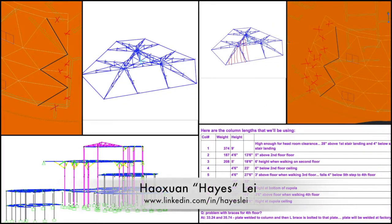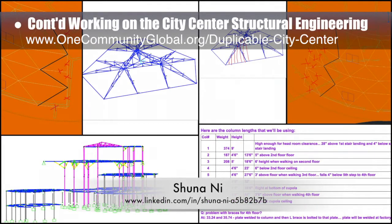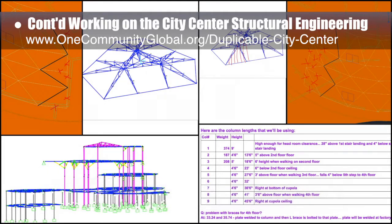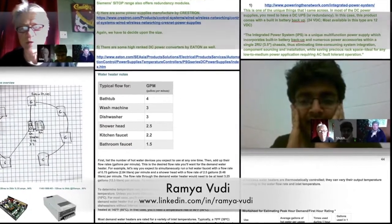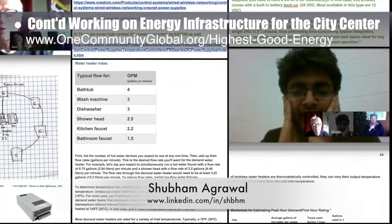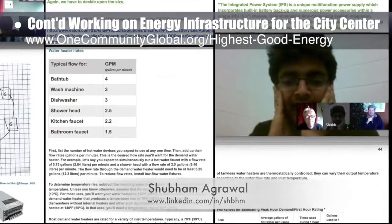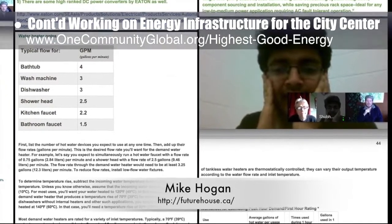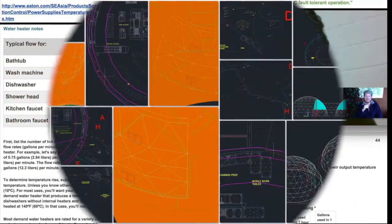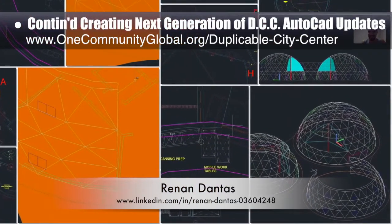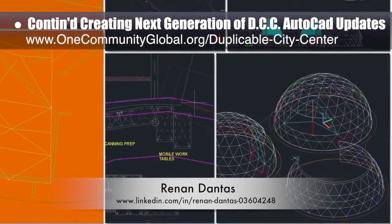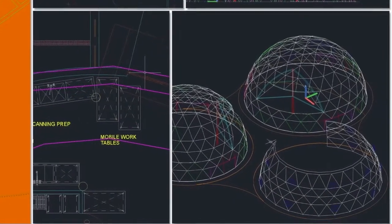Hayes Lay, structural engineer, and Shunani, master's of mechanical engineering and civil engineering PhD, also continued their work on the city center's structural engineering. This week's focus was continuing the roof designs, updates to the dome geometry, and working out the details for the different column section length and weight specifics. Ramya Voodi and Shubham Agrawal, both electrical engineers, continued their work on the energy infrastructure for the city center, including research into hot water heaters and power supplies in collaboration with Mike Hogan, automation systems developer and business systems consultant. Han and Dante, mechanical engineer, continued with his 10th week on the duplicable city center AutoCAD updates, integrating the new dome geometry into the master file and 3D modeling the domes to help the structural team with their decision-making process.